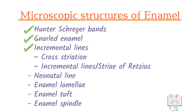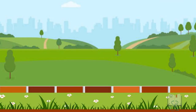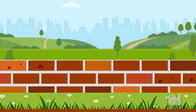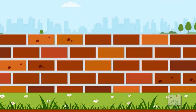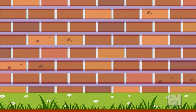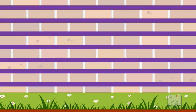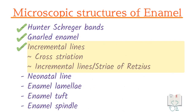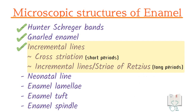Enamel is formed incrementally with periods of activity alternating with periods of rest. This variation in deposition results in rhythmic structural markings, which are of two types: cross striations, formed at short periods, and incremental lines — or striae of Retzius — formed at long periods.